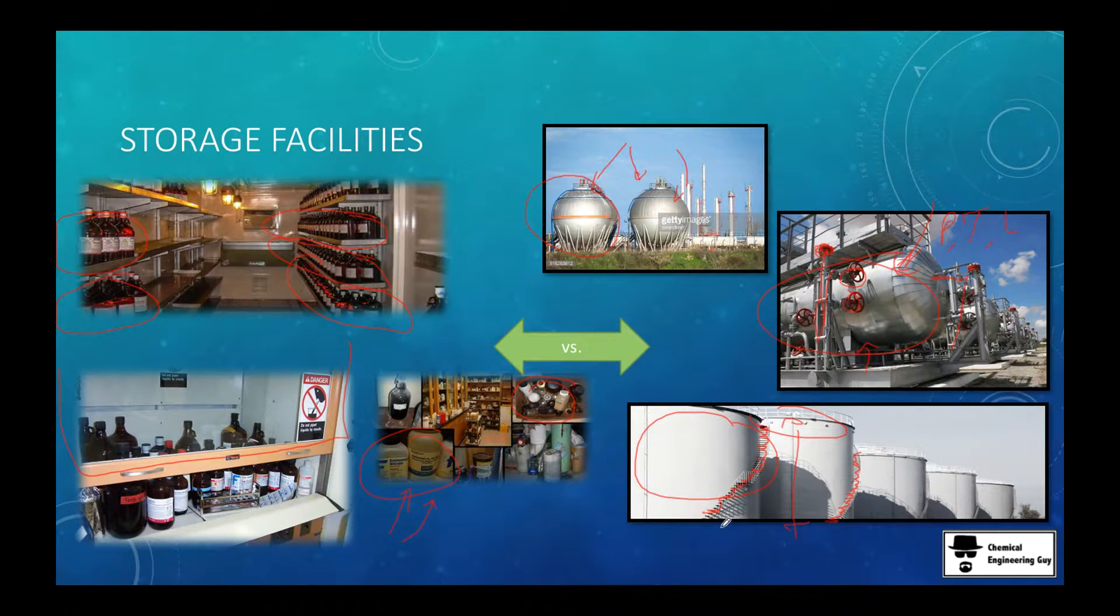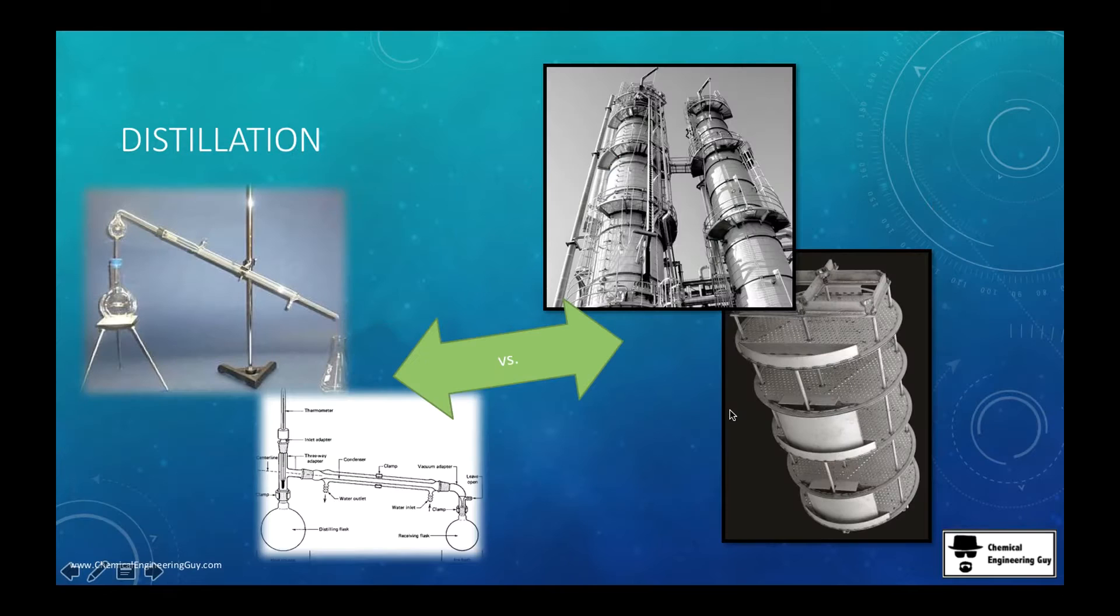For distillation, hopefully you checked this out when you were a student in high school. You got this little thing, you burn the Bunsen burner, it generates heat and starts evaporating. This right here goes here, then we start cooling this so the vapor turns out as a liquid. It goes here and you make your separation.